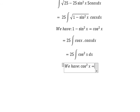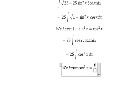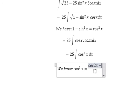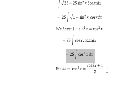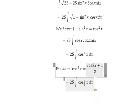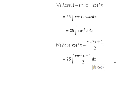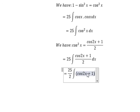We will get about cos 2x plus 1 divided by 2. Now we need to replace this one. We put number 2 in here. We got about 25 over 2, and we have cos 2x plus 1 dx.